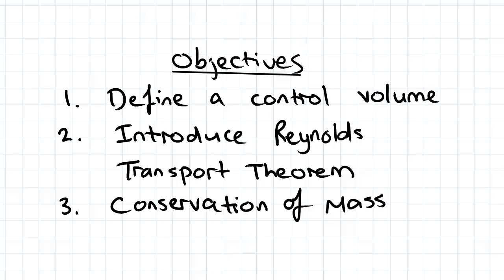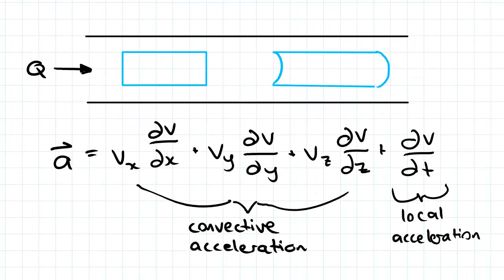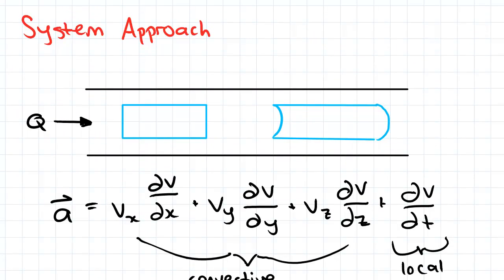Up until now we've dealt with streamlines and thought of a fluid as individual particles that follow various streamlined patterns. If we consider a group of these fluid particles in a defined space and follow each particle as they move within a flow, we can apply conservation laws that we've hopefully learned before this course.